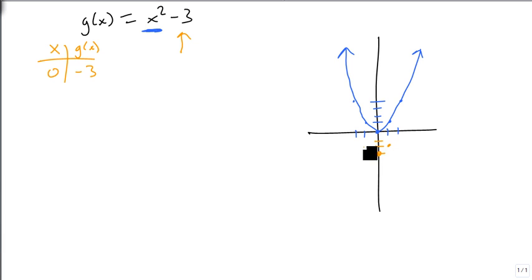We go over 1, up 1, over 1, up 1, and over 1, up 1, 2, 3. Over 1, up 1, 2, 3. And we get this graph instead, which is the same as our other graph, but we just pulled all the points down three places.